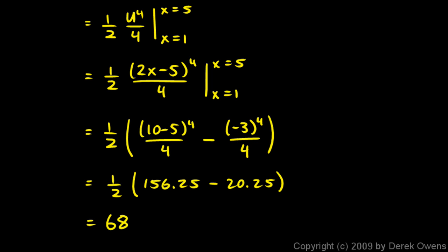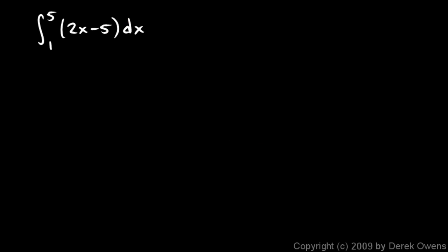Next I'll work the same problem a slightly different way, and you'll see that we get the same answer of 68. Here's the integral again. The integral from 1 to 5 of 2x minus 5 cubed dx. And here's the substitution. u equals 2x minus 5. Now we're going to start off the same way. We take the derivative of u, and that's just 2. And we'll solve that for dx.